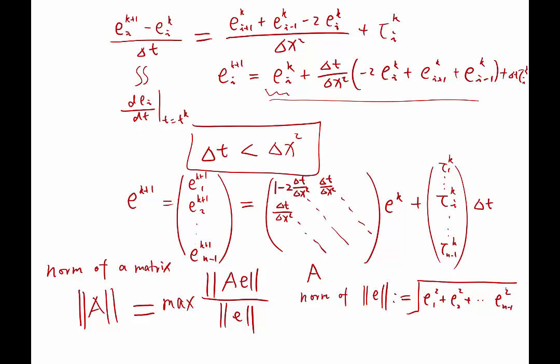You can take a look at this matrix and you can particularly look at what's called the norm of this matrix. So the norm of this matrix defines the maximum possible ratio of A times E divided by E, and here both the numerator and denominator are the norm of a vector.